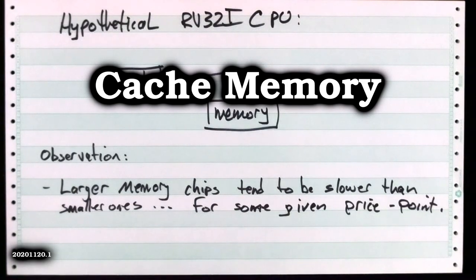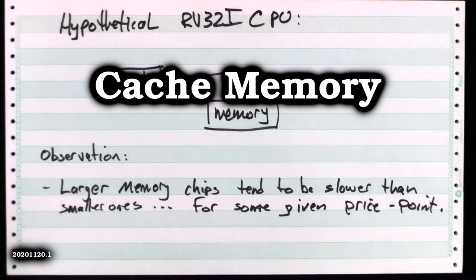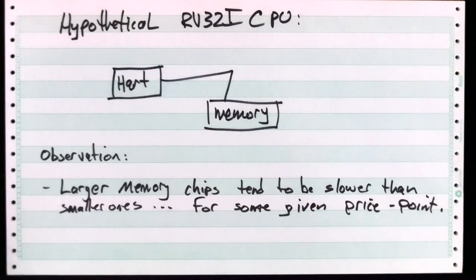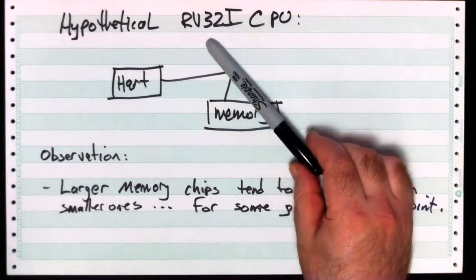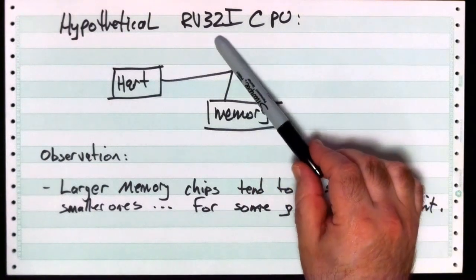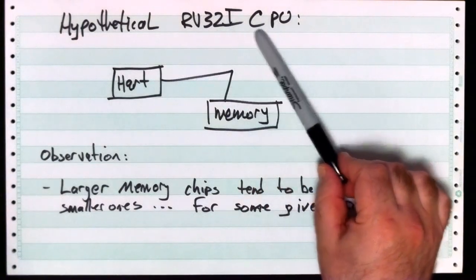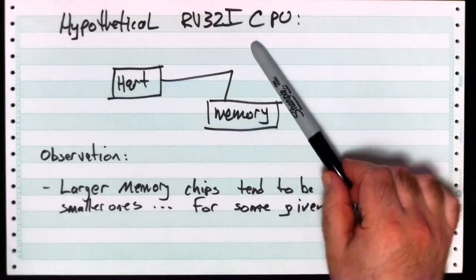Hey, John here. Let's talk about cache memory — kind of how it works, a little bit of an introduction. So let's start by reviewing our hypothetical RISC-5 RV32i CPU that we've been talking about.